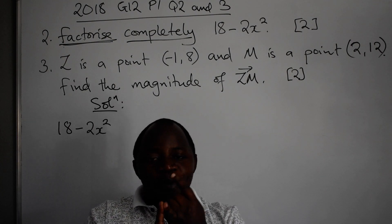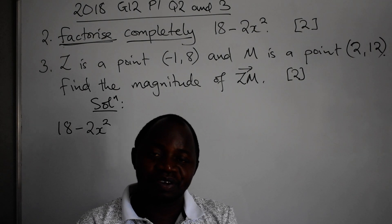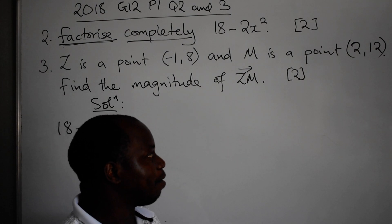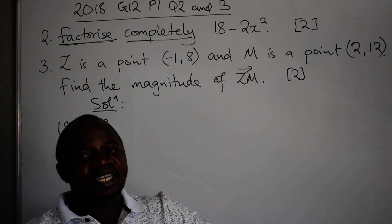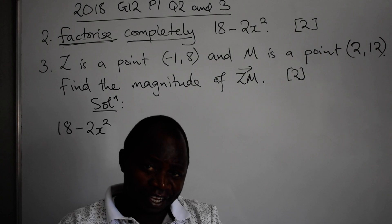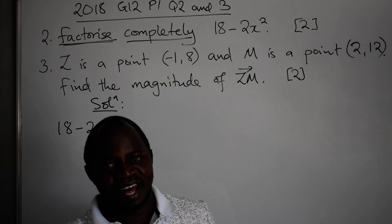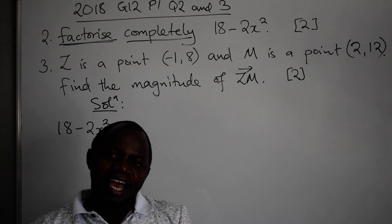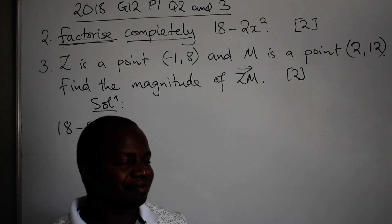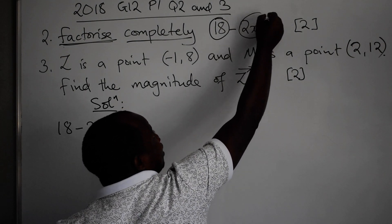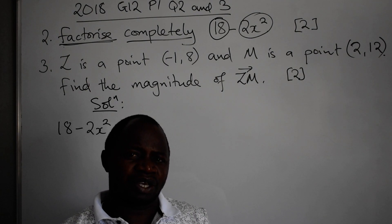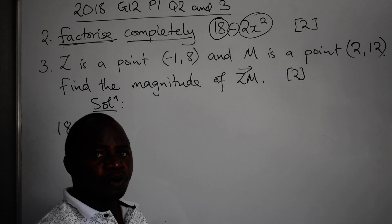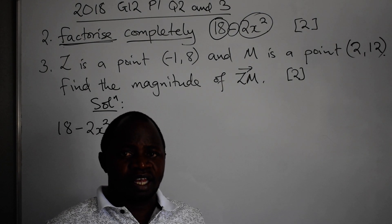We have what we call common factorization. We have difference of two squares. We have quadratic factorization. We also have factorization by grouping. When we say difference of two squares, this type will always have two terms, and the two terms will always be separated by a minus sign. Always there should be a minus.